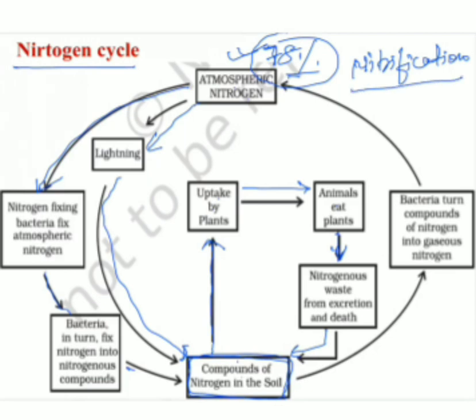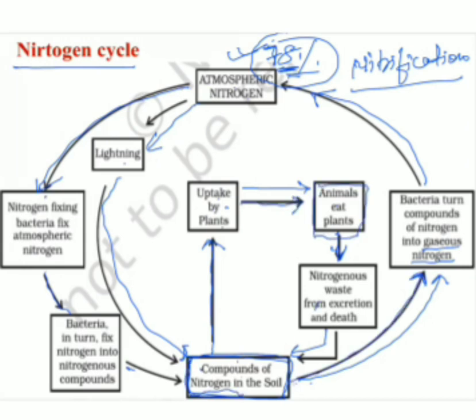The other half of the cycle is when some bacteria present in soil convert these nitrogen compounds back into nitrogen gas, which goes back to the atmosphere. So the total amount of nitrogen in the atmosphere remains constant at 78%. In this way the nitrogen cycle completes.